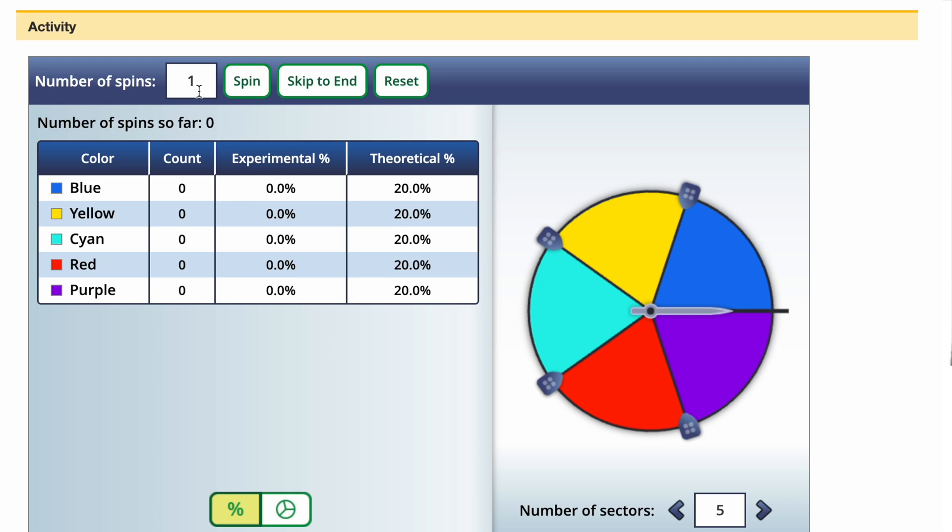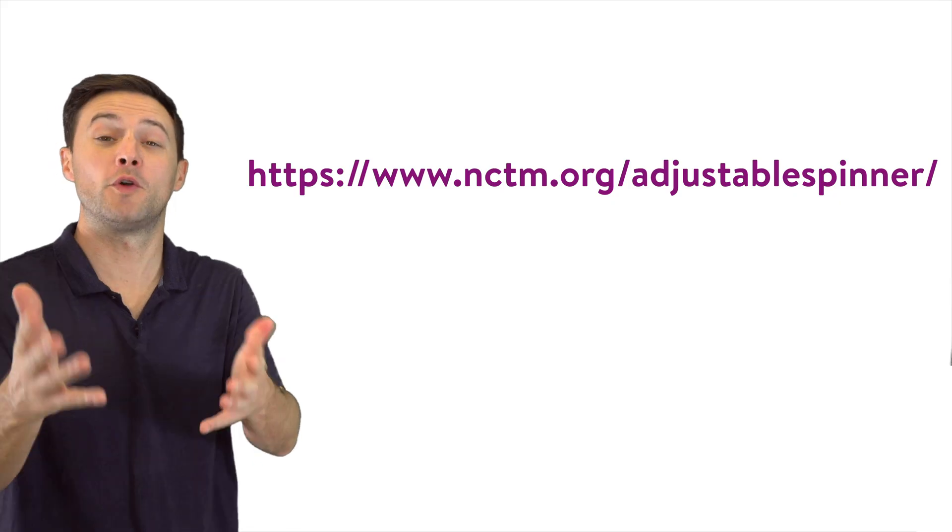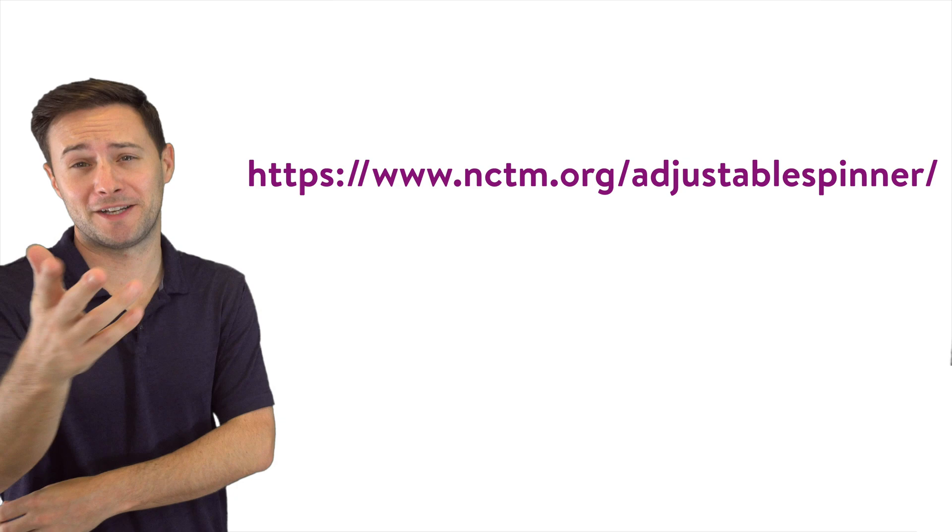You can choose the number of spins. In this case, I did 50. And maybe the best feature is that you don't have to sit there and wait until all 50 happen. You can click skip to the end, and then it'll just show your results. So if you want to do this on your own, go to the website and give it a try.